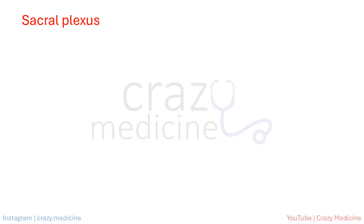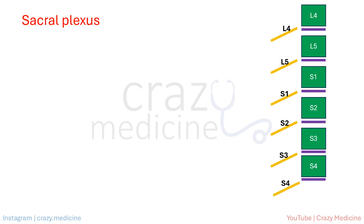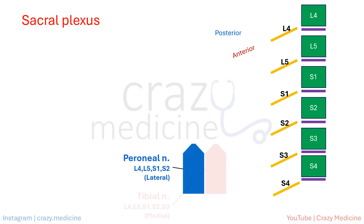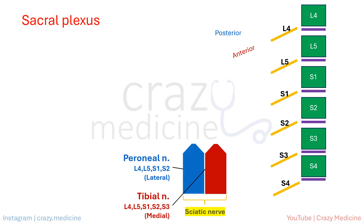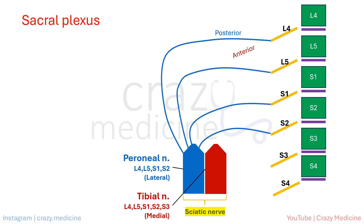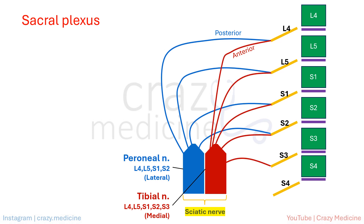Now coming to the sacral plexus. It is formed by nerves of anterior rami of L4 to S4. Similar to the lumbar plexus, each rami or nerve has anterior and posterior division. The two main nerves are the peroneal division and tibial division of the sciatic nerve. The peroneal component is formed by the posterior division of L4 to S2 roots, whereas the tibial division is formed by the anterior division of L4 to S3 roots. Remember, the tibial component has the S3 root value, which is not present in the peroneal component.